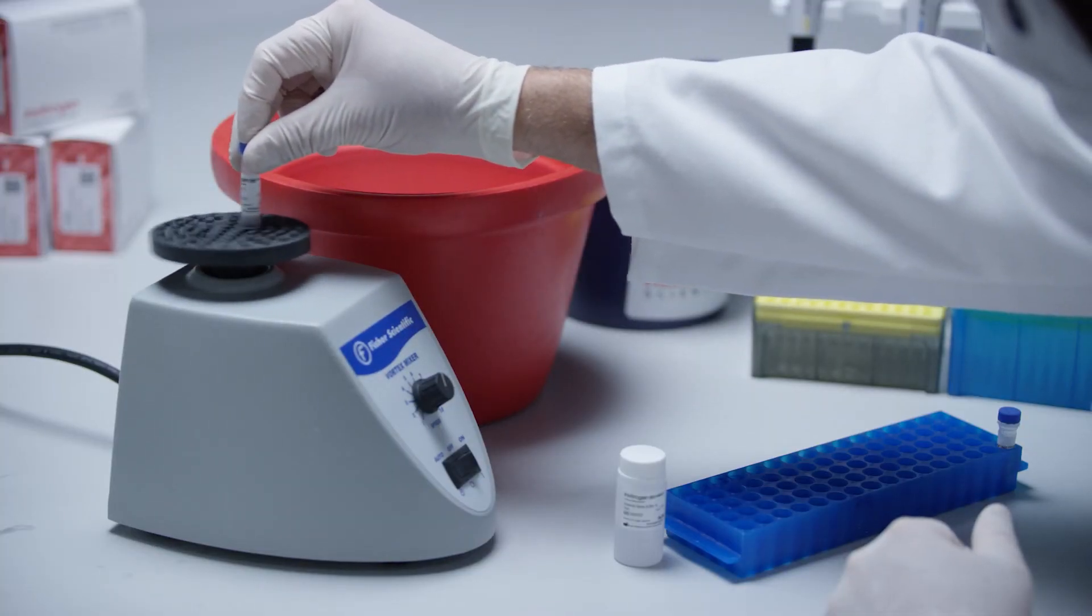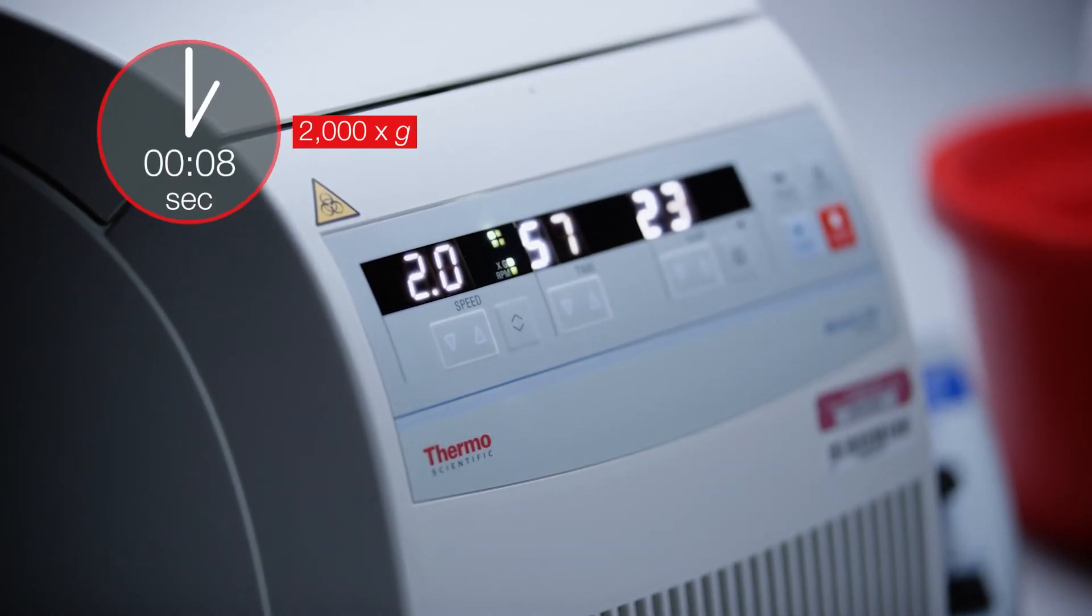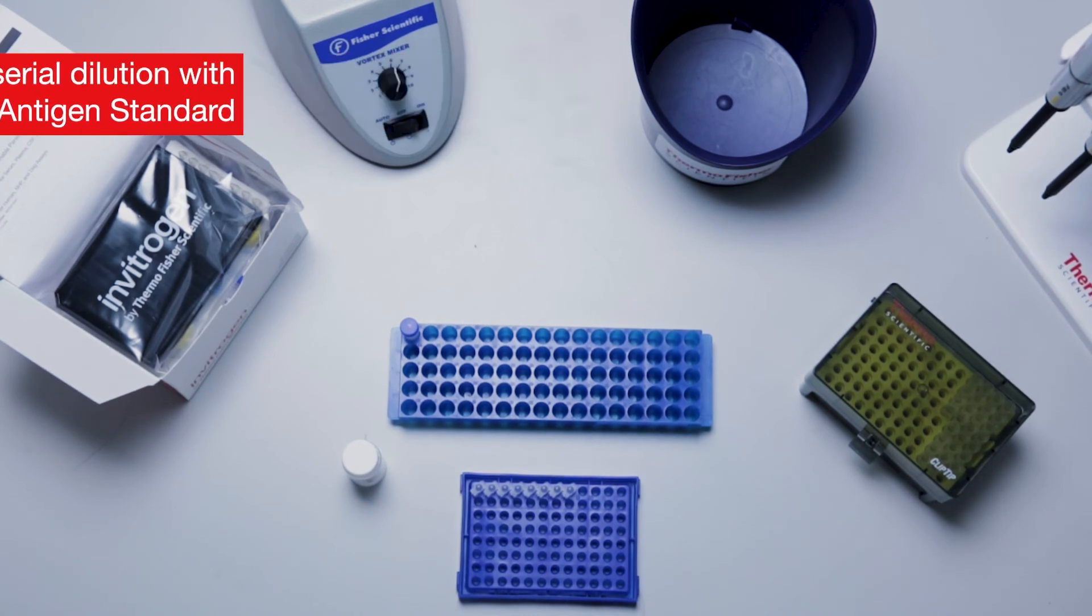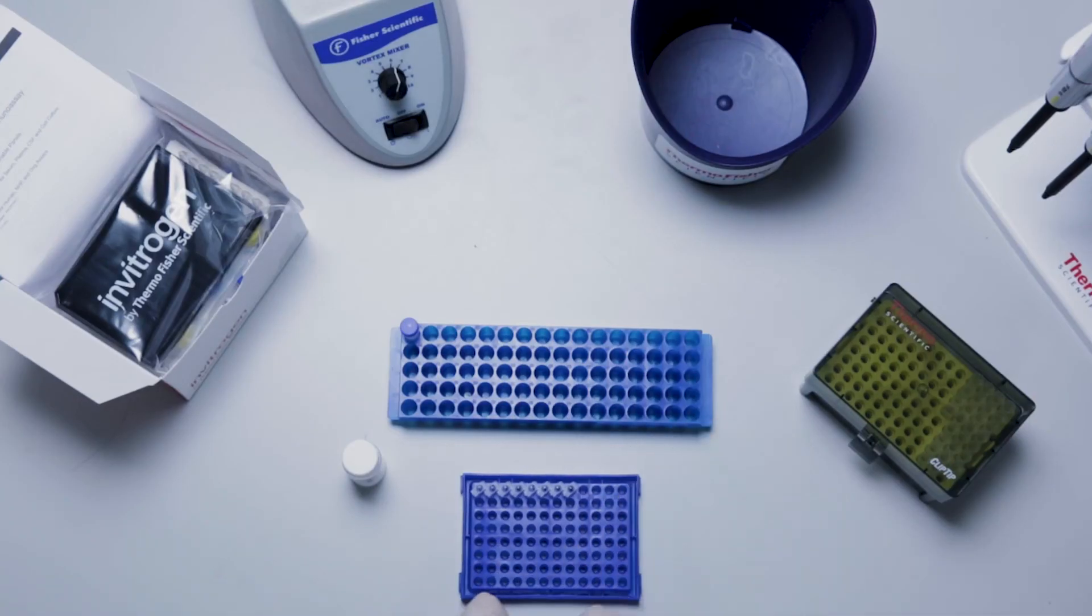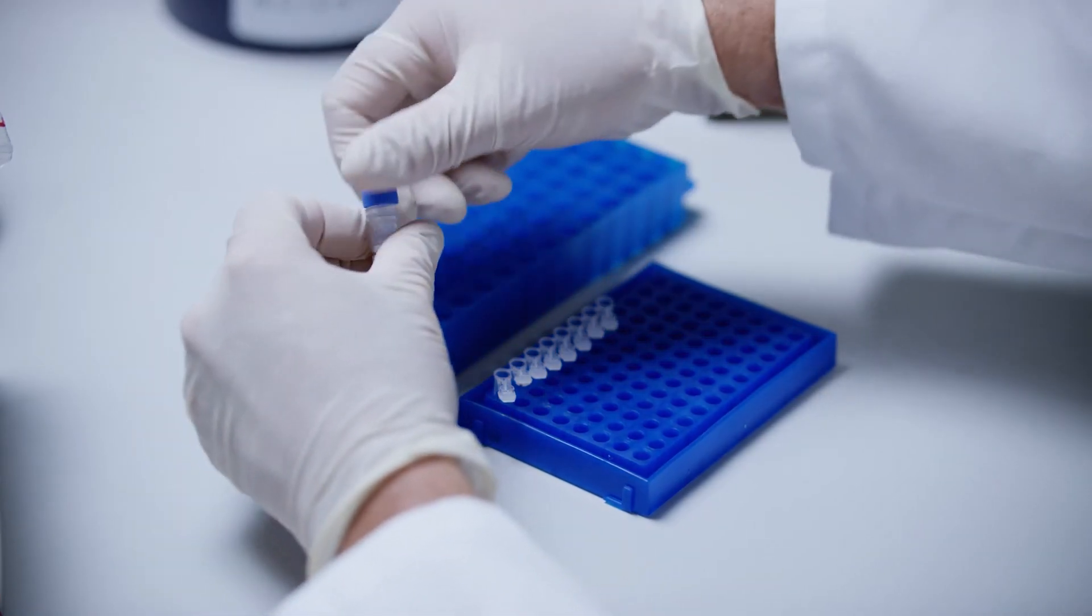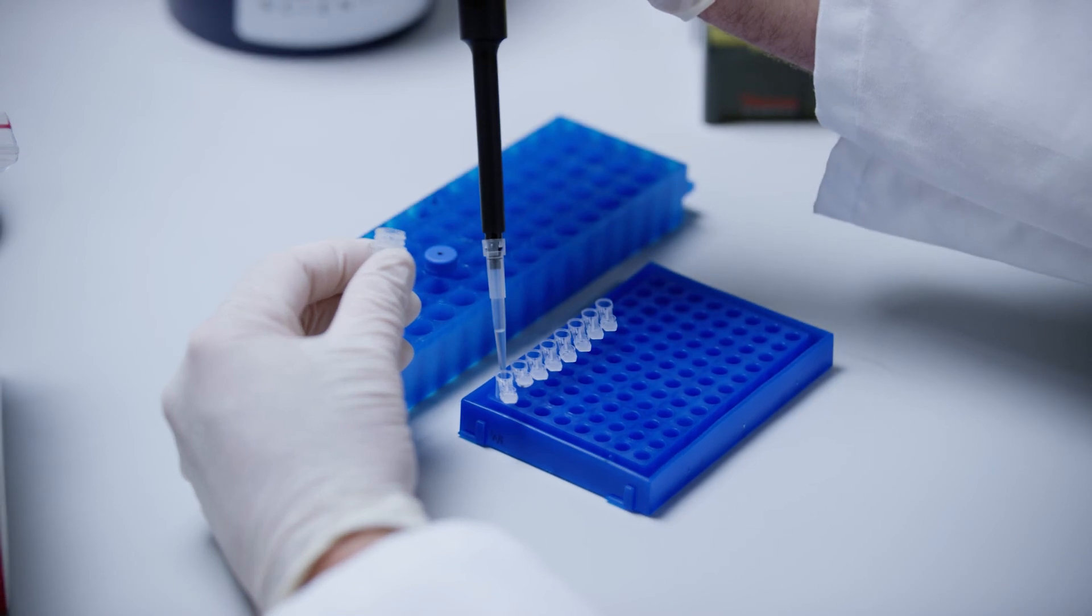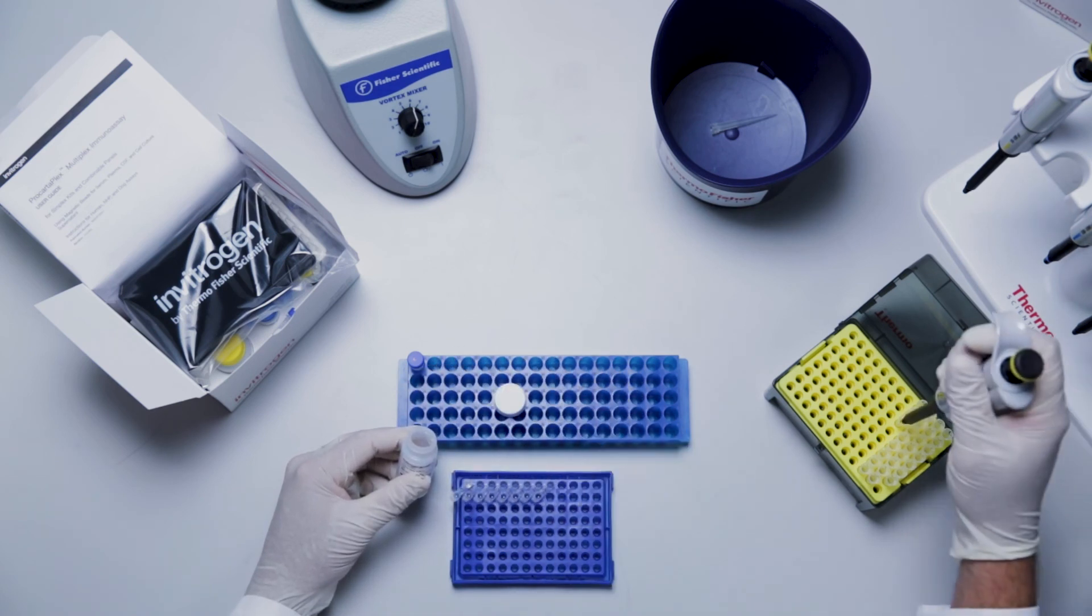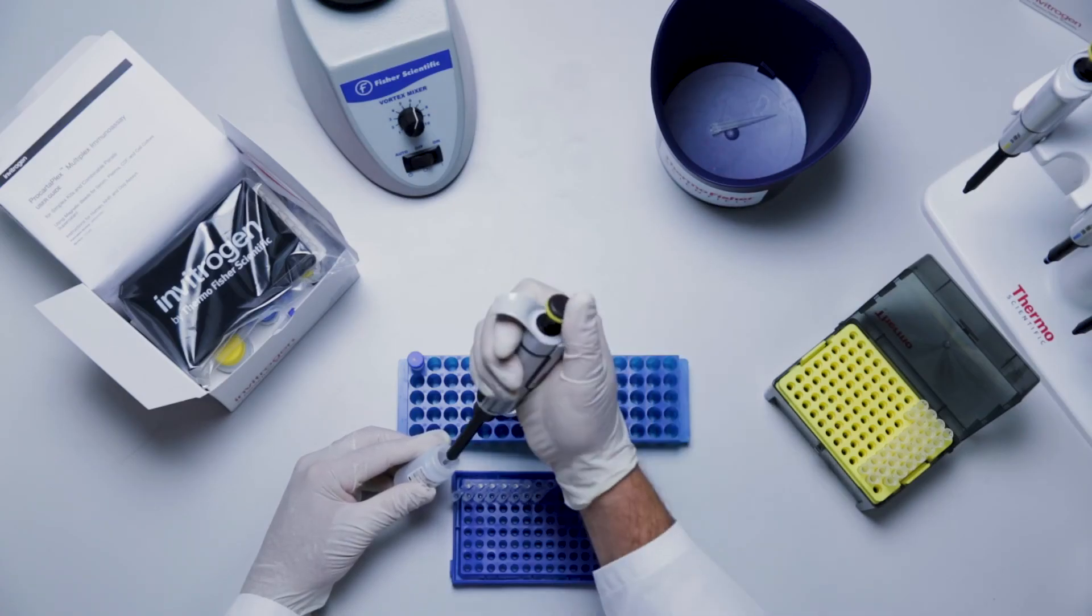Vortex the working antigen standard vial at high speed. Centrifuge at 2000 g for 10 seconds. Prepare a 4-fold serial dilution of the working antigen standard using the 8-tube strip provided. Label the tubes sequentially standard 1 through standard 7. Label the 8th tube for use as a background. Add 200 microliters of the working antigen standard into the first tube labeled standard 1. Add 150 microliters of universal assay buffer or cell culture medium into standard tube 2 through standard tube 7 as well as 150 microliters to tube 8 as a background.